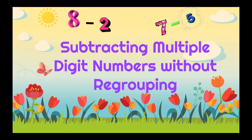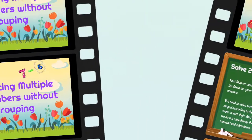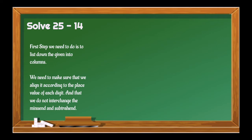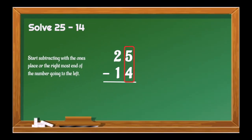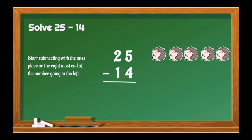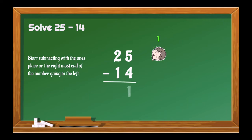Let's now proceed with subtracting multiple-digit numbers that do not need regrouping. In subtracting multiple-digit numbers, the first step is to list down the givens into columns, just like in addition. Make sure to align them according to the place value of each digit, and do not interchange the minuend and the subtrahend. Start subtracting with the 1's place, going to the left. For this given, we start with 5 and 4 — those are the digits in the 1's place. 5 minus 4 is equal to 1. Then proceed with the 10's place: 2 minus 1 gives us 1. So, 25 minus 14 is equal to 11.